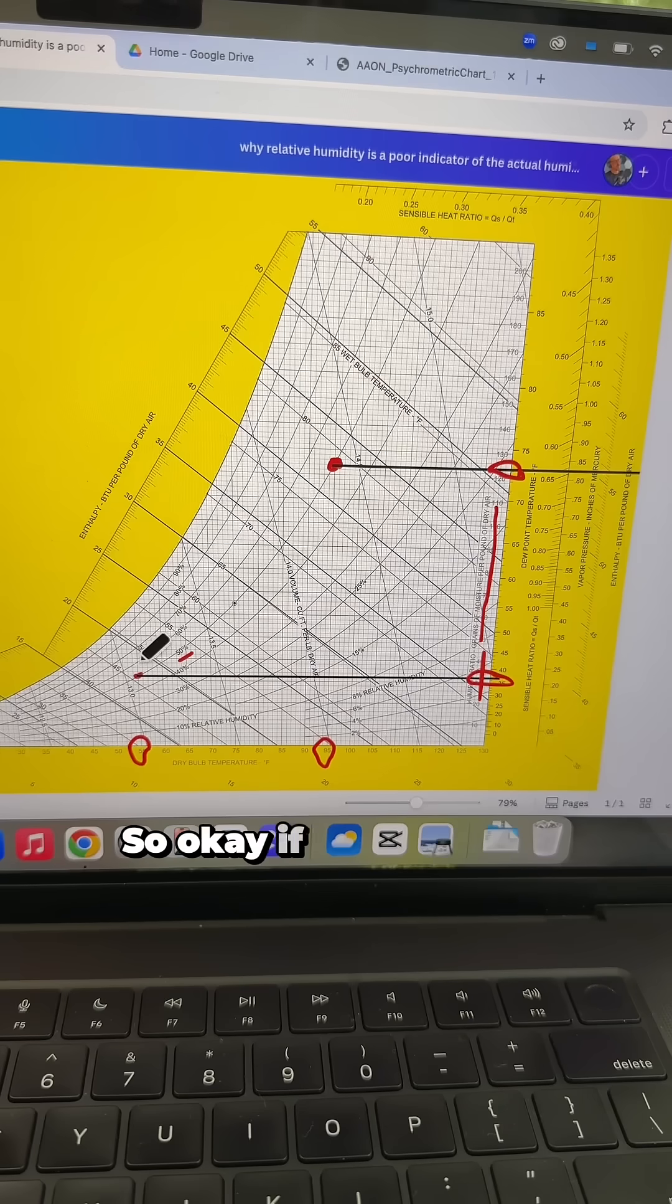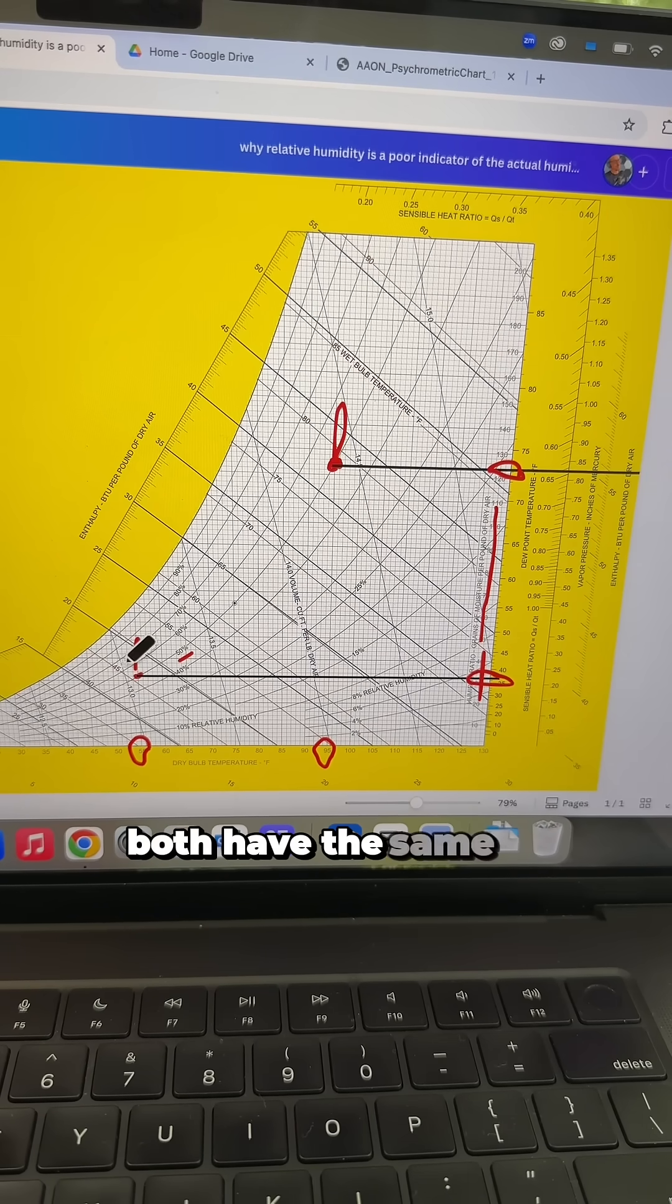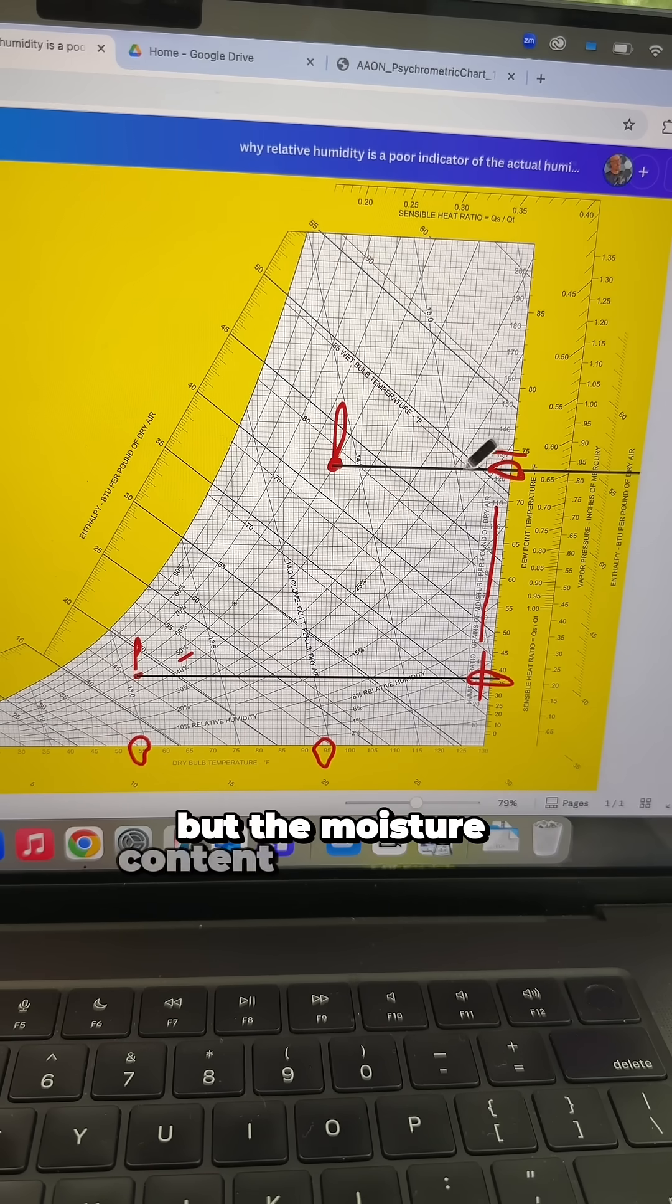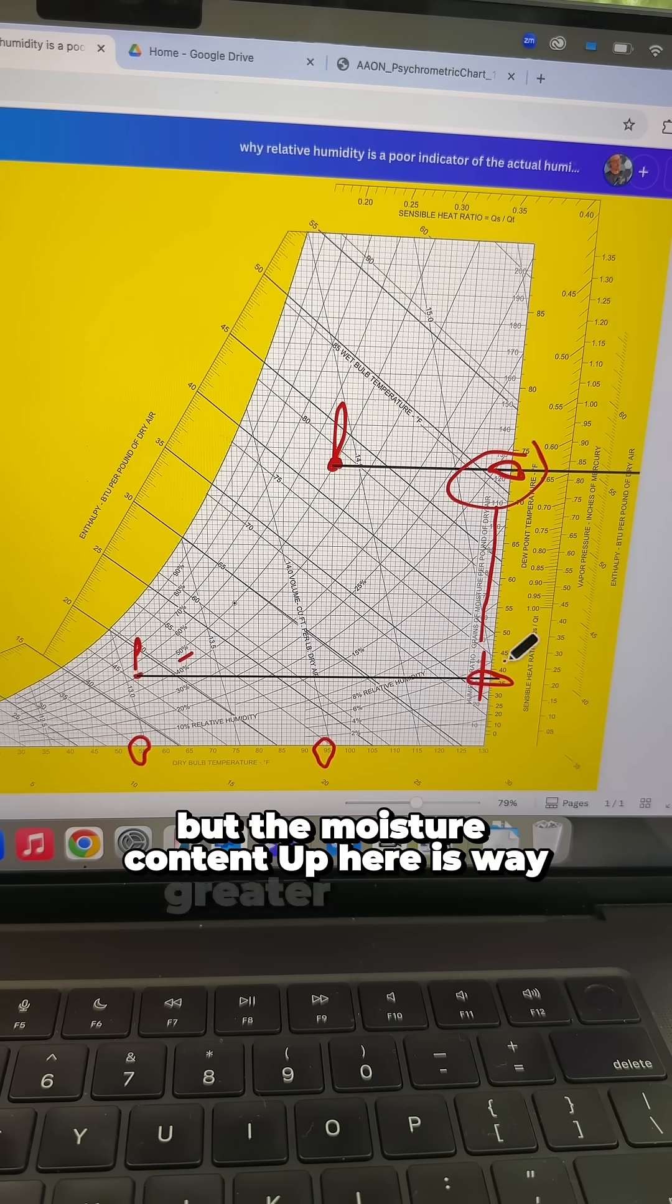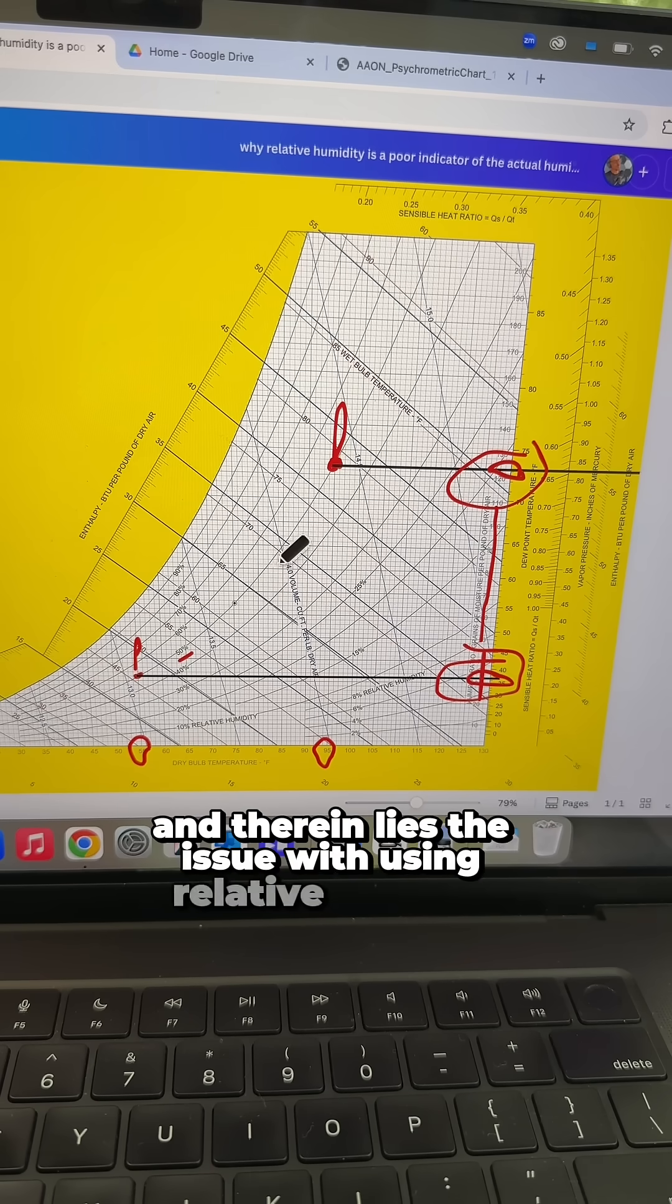So, okay, if we zoom out here, you'll see that this point and this point both have the same 50% relative humidity, but the moisture content up here is way greater than here, and therein lies the issue with using relative humidity.